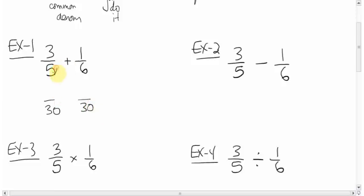What times five gives you 30? Six does. Do the same to the top. Three times six, 18. Don't forget the plus. What times six gives you 30? Five does. Do the same to the top. Five times one is five. And remember the second part of that rule was add the tops, leave the bottom. 18 plus five is 23. And leave the bottom 30. Can you reduce it? Nope. That's it.